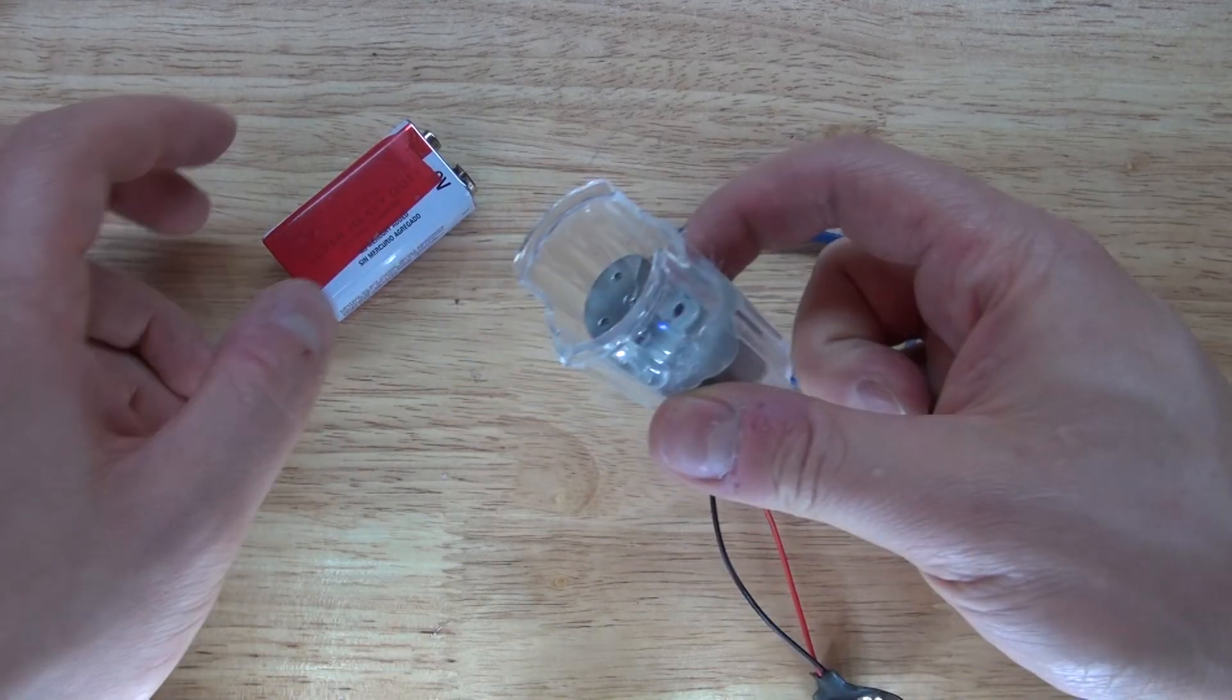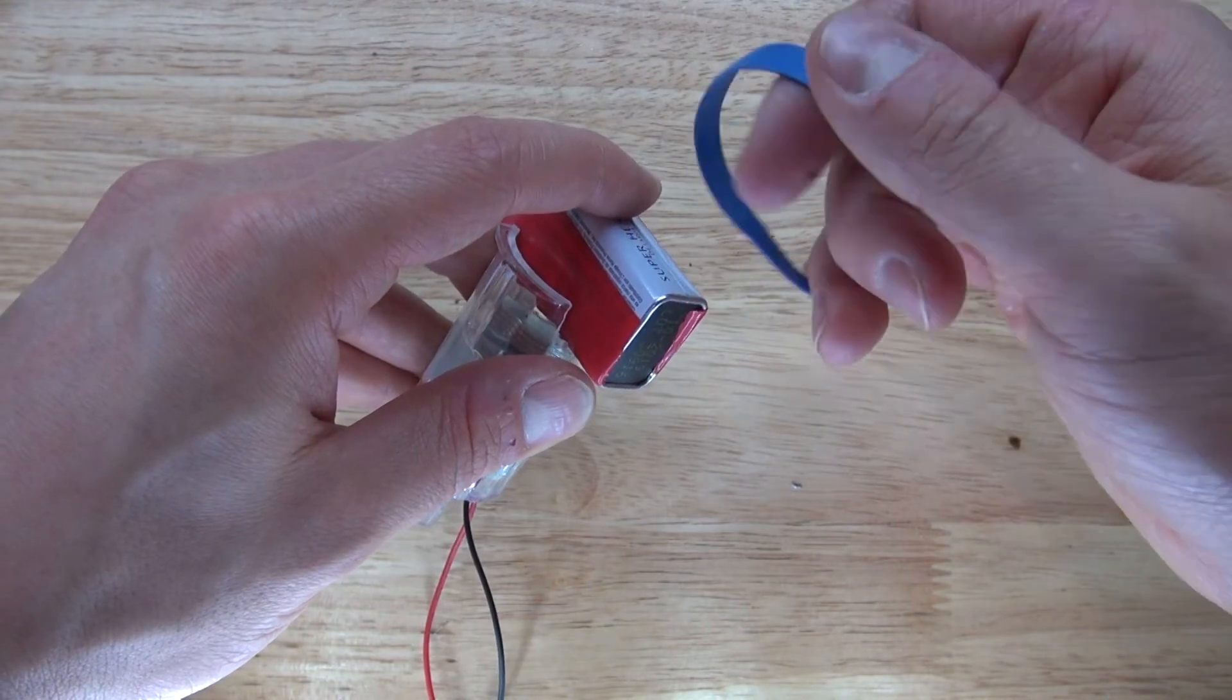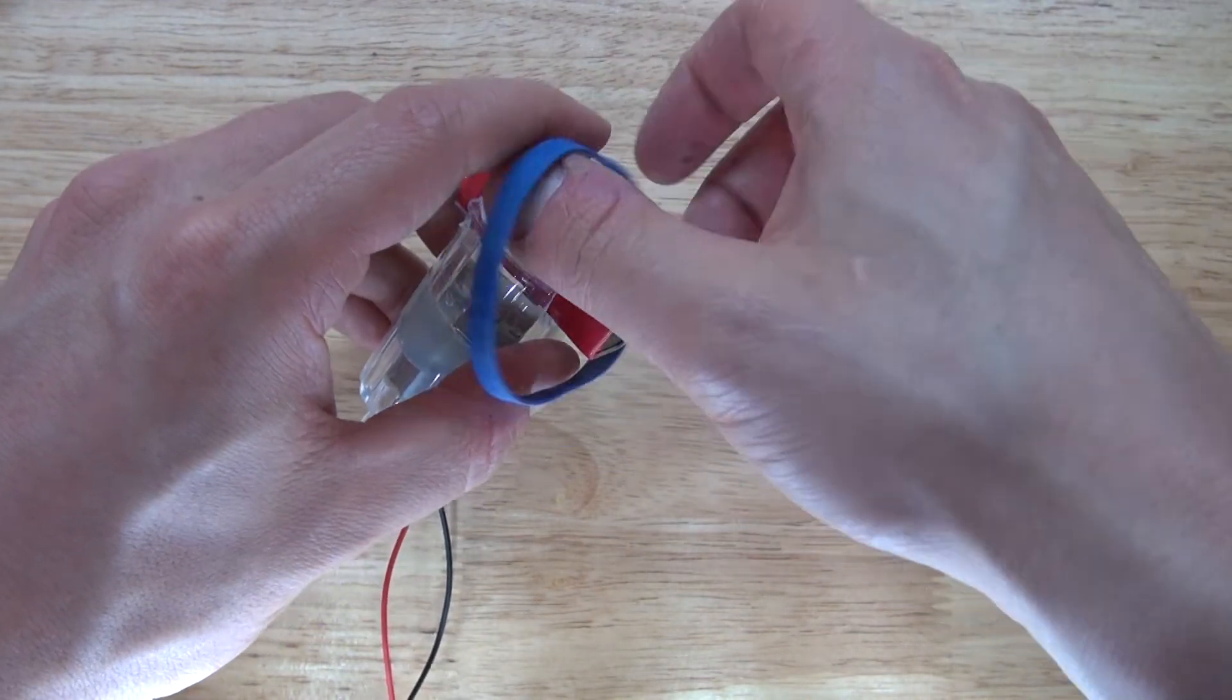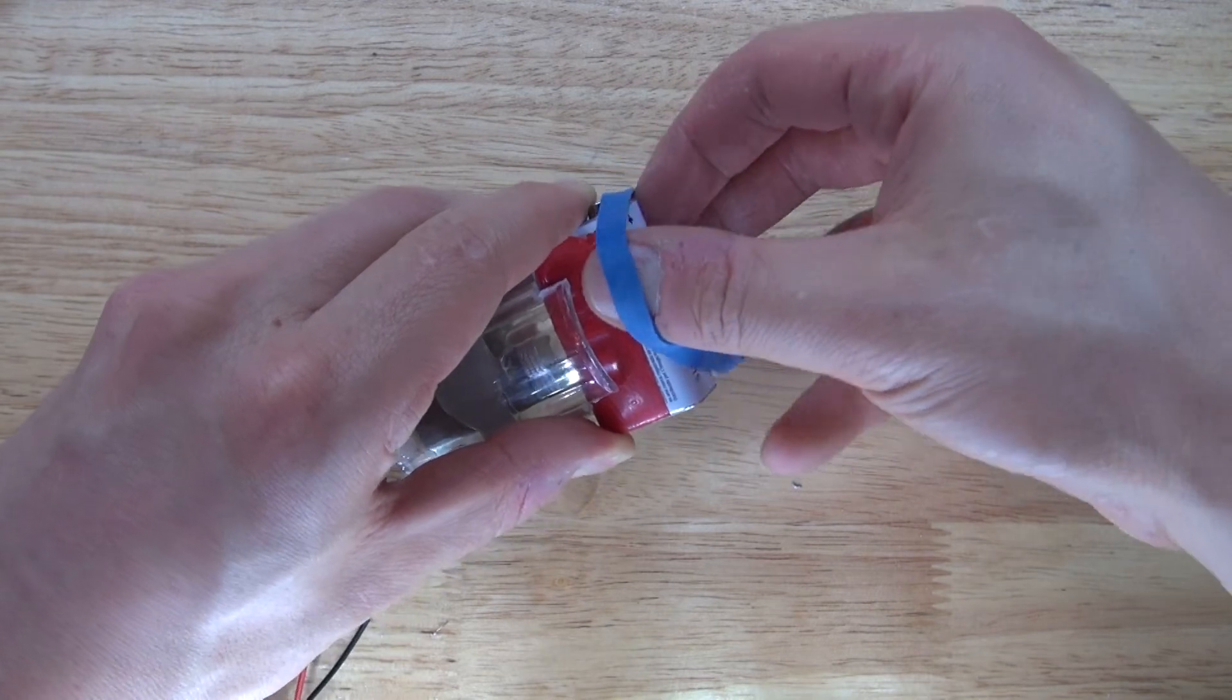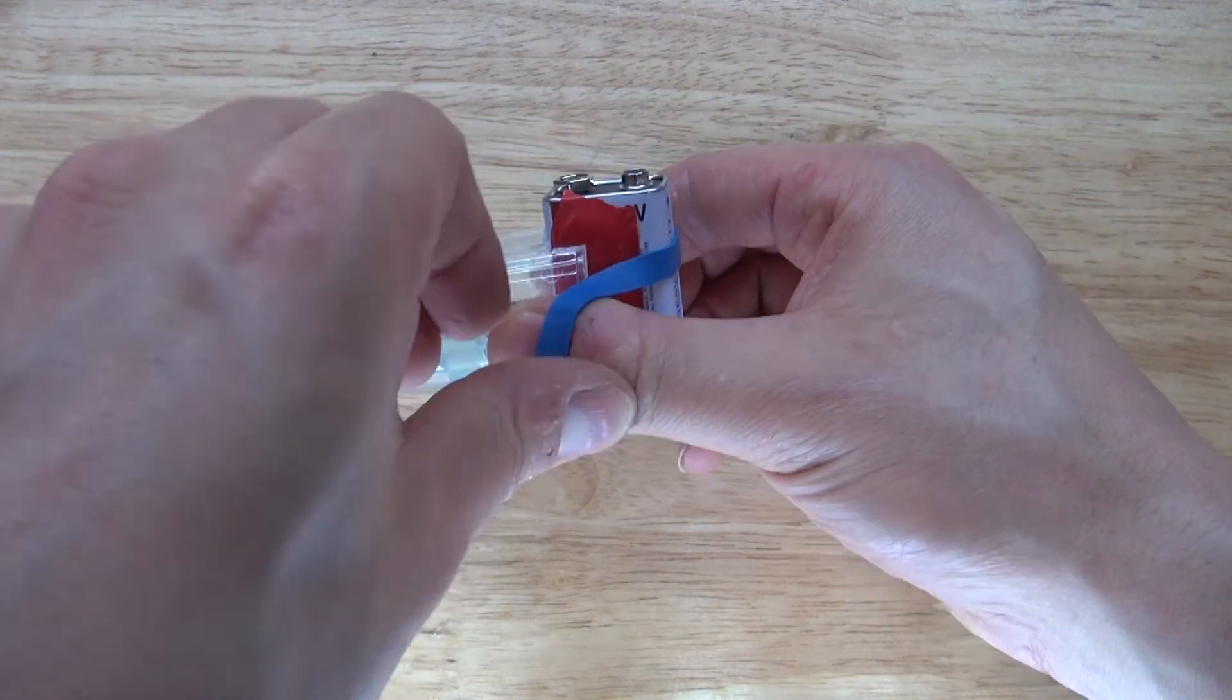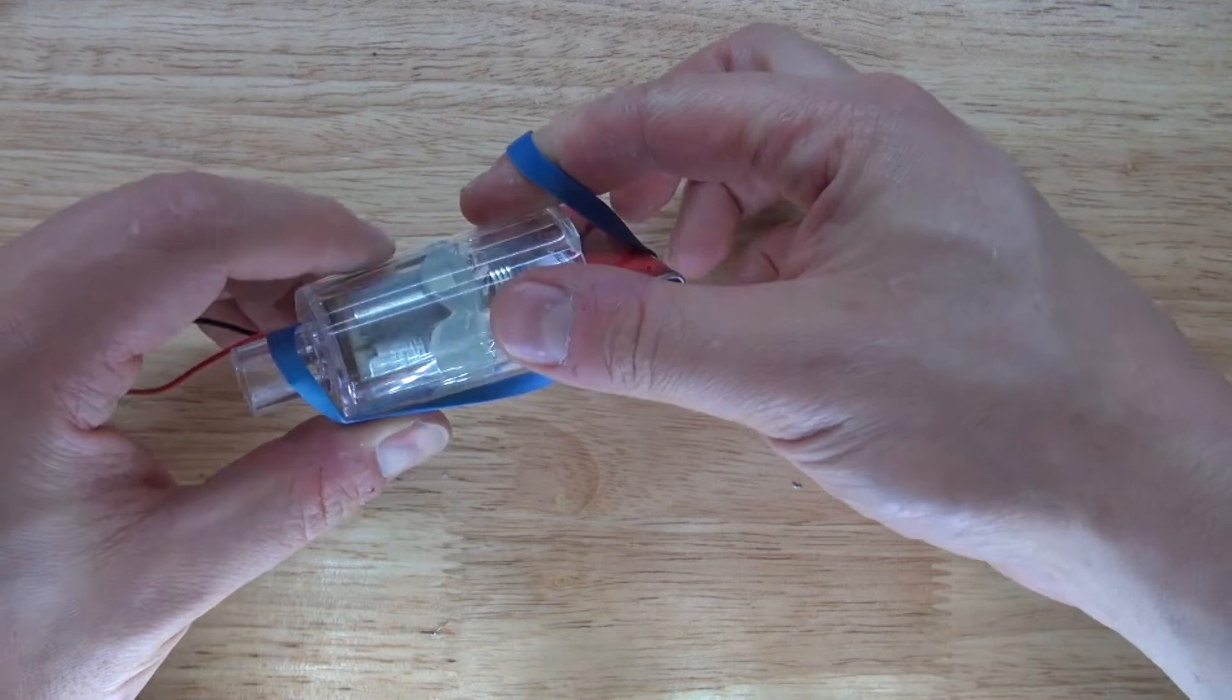Now it's time to put the battery into place. Put it on the side just like this. Take my rubber band and wrap it around just like this.